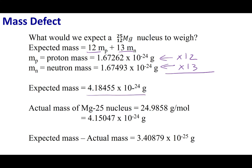This is the expected mass. Now let's go into the lab and measure the actual mass of a magnesium-25 nucleus. What you'll find is it weighs a different amount — somehow we've lost a little bit of mass. The difference between the expected and actual mass is listed as 3.40879 times 10 to the negative 25th grams.